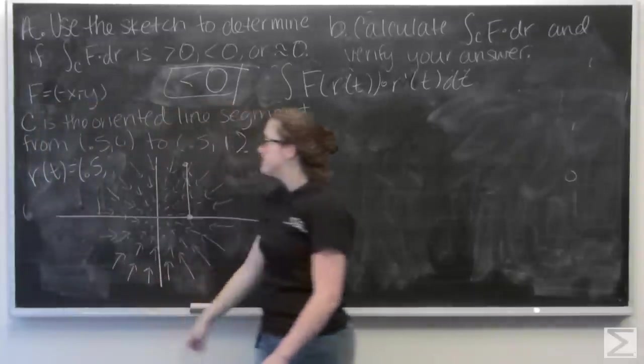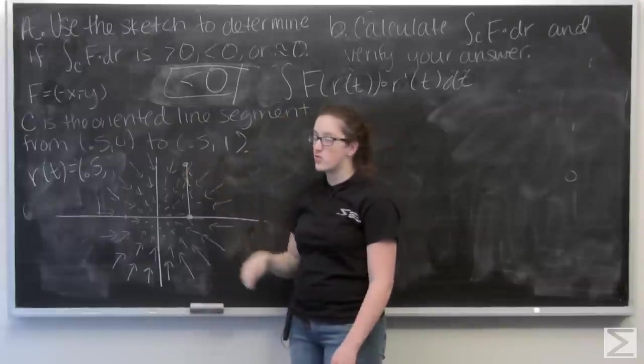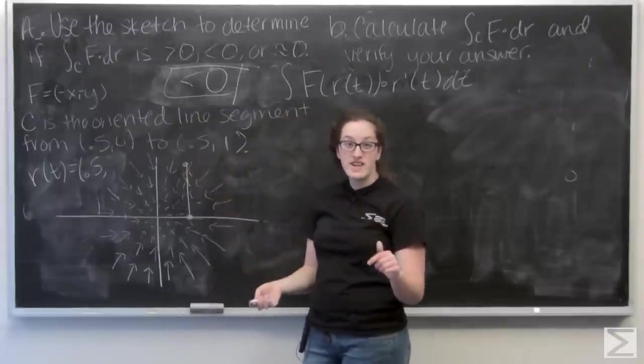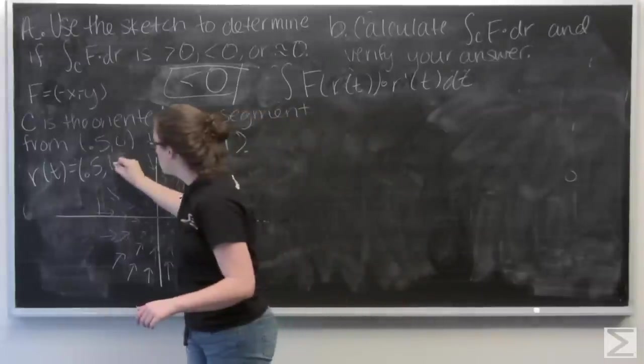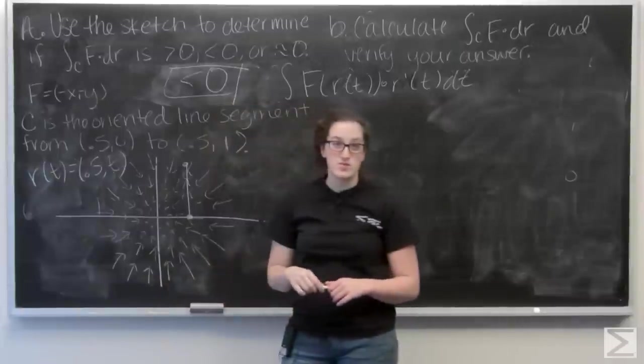And then the easiest way to parametrize the move from 0 to 1 is to just put t as the j component. And then say that t is between 0 and 1.